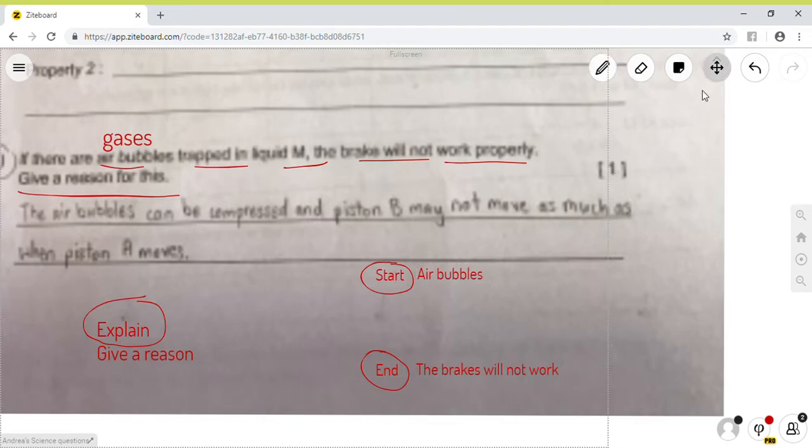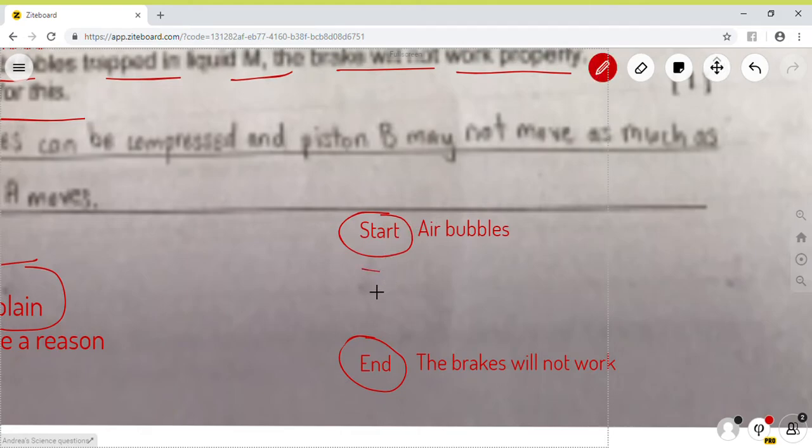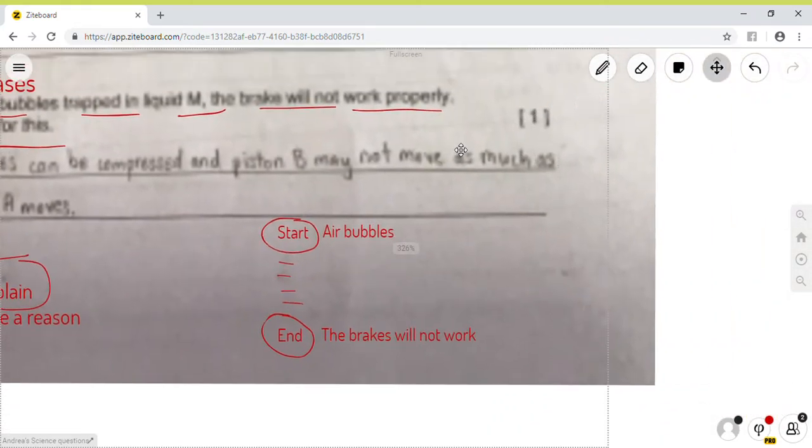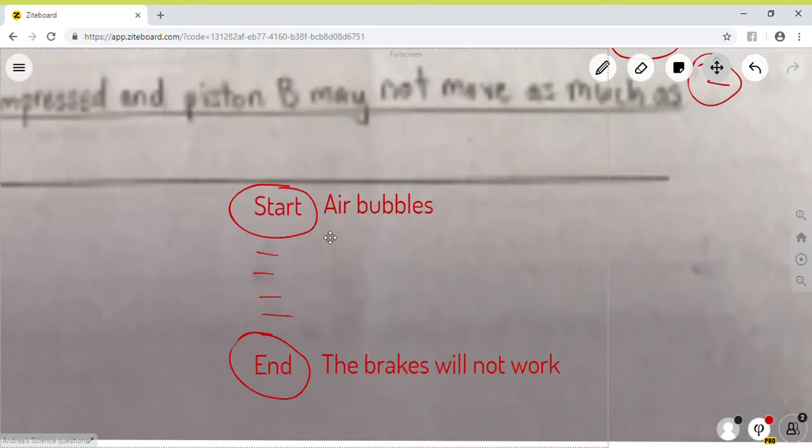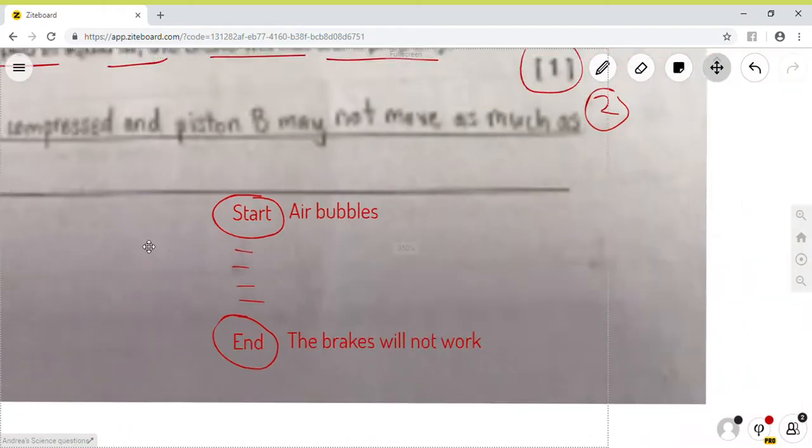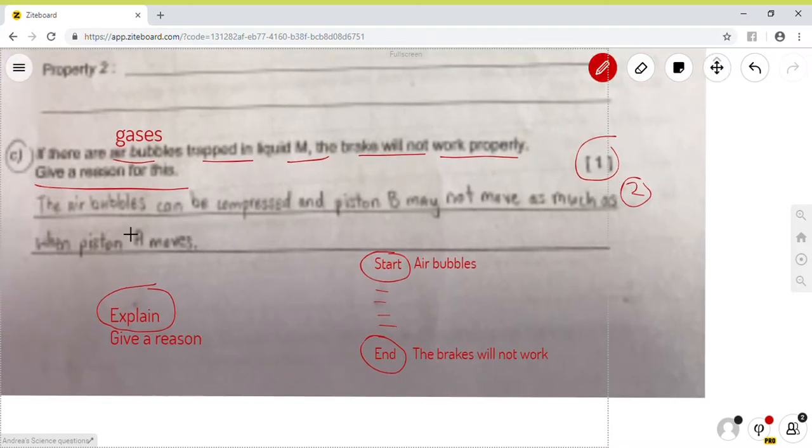So, your job when you are doing the explain, when you are doing explanation is to fill in the in-between. You know what I mean? So, if you want to score like maximum marks, it can be I mean in this case it's one mark, but it can be like two marks type of question. In this particular example, you can see that the question says that air bubbles can be compressed. So, what we do is, because the air bubbles can be compressed, what if it can be compressed?